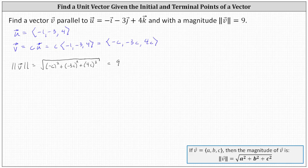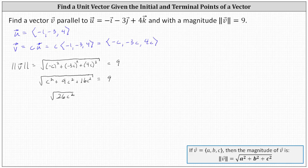Simplifying under the square root first, we have the square root of c squared plus nine c squared plus 16 c squared equals nine. Adding like terms, we have the square root of 26 c squared equals nine. The square root simplifies because c squared is a perfect square, but remember the square root of c squared must be positive, and therefore the square root of c squared equals the absolute value of c. This gives us the absolute value of c times the square root of 26 equals nine.